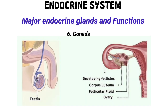Number six: the gonads. The gonads, which include the testes in males and ovaries in females, produce sex hormones. The ovaries secrete estrogen and progesterone, which regulate the menstrual cycle, maintain pregnancy, and promote development of female secondary characteristics. The testes produce testosterone, which is responsible for sperm production and male secondary sex characteristics, such as a deeper voice and muscle growth. The placenta, a temporary endocrine organ during pregnancy, secretes hormones such as human chorionic gonadotropin (HCG), estrogen, and progesterone to support fetal development.